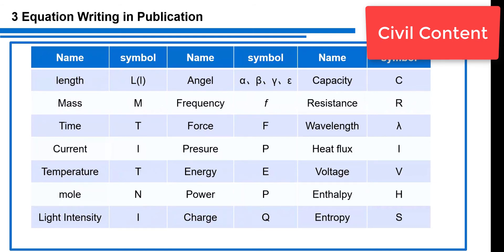Light intensity is capital I, angle uses alpha, beta, gamma, frequency is f, force is capital F, pressure capital P, energy capital E, power capital P, charge capital Q, capacity capital C, resistance capital R, wavelength lambda, heat flux is q, voltage V, enthalpy H, entropy S. These are pretty much universal names and symbols. For example, if you write an equation with energy, you should use E to stand for this.